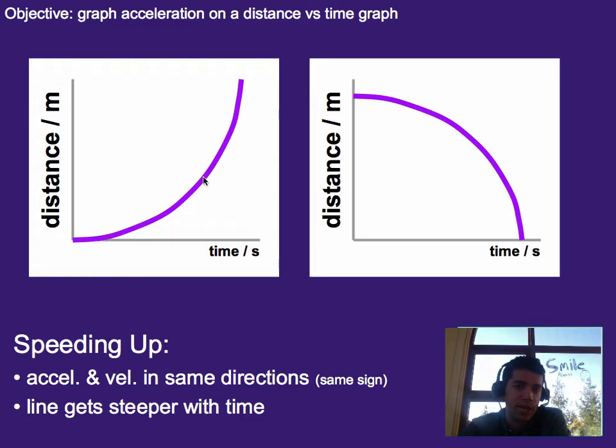So in this case, our line is getting steeper and steeper in a positive slope. Here, our line is getting steeper and steeper in a negative slope. This would be a negative velocity and a negative acceleration. This would be a positive velocity with a positive acceleration. Just getting steeper, just different directions.